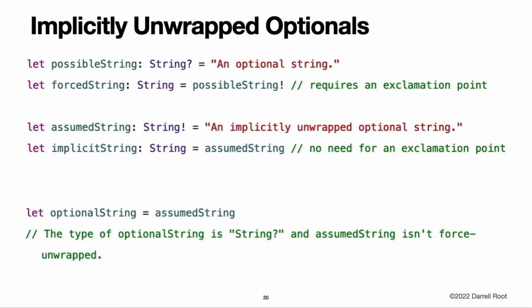These kinds of optionals are defined as implicitly unwrapped optionals. You write an implicitly unwrapped optional by placing an exclamation point rather than a question mark after the type that you want to make optional. Rather than placing an exclamation point after the optional's name when you use it, you place an exclamation point after the optional's type when you declare it. Implicitly unwrapped optionals are useful when an optional's value is confirmed to exist immediately after the optional is first defined and can definitely be assumed to exist at every point thereafter. An implicitly unwrapped optional is a normal optional behind the scenes, but can also be used like a non-optional value without the need to unwrap the optional value each time it is accessed.